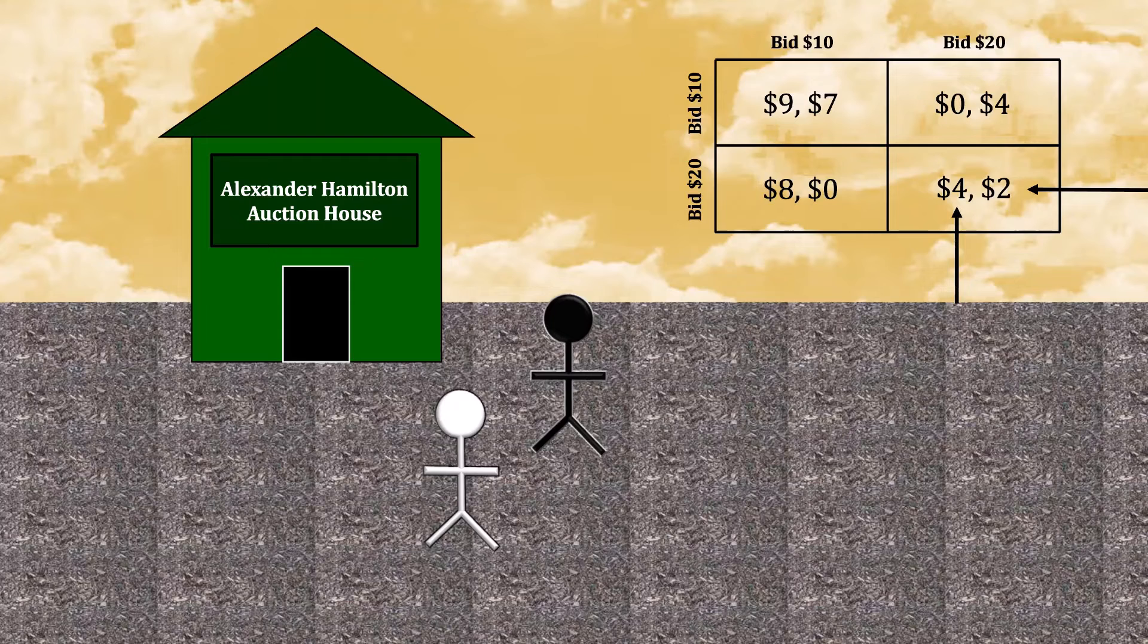In turn, the correct answer to the puzzle is that it depends. If you're expecting your opponent to bid $10, you should also bid $10. But if you're expecting your opponent to bid $20, you should also bid $20.